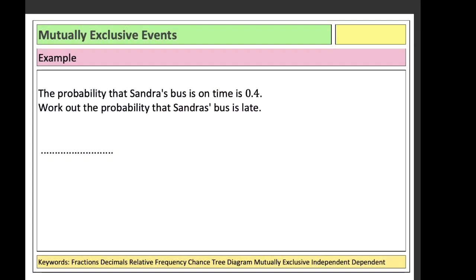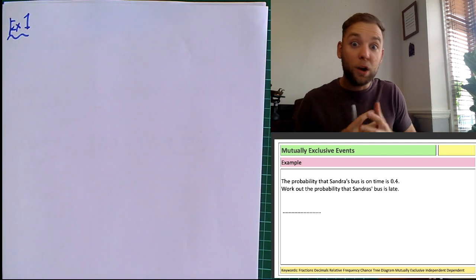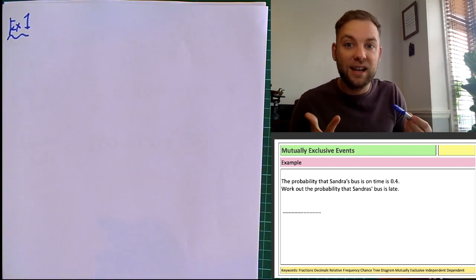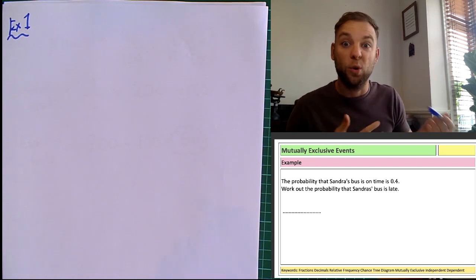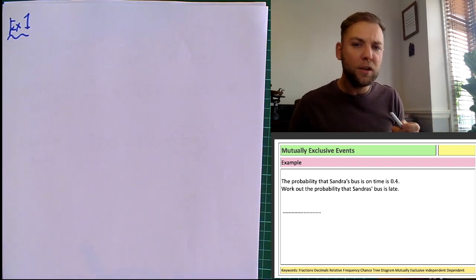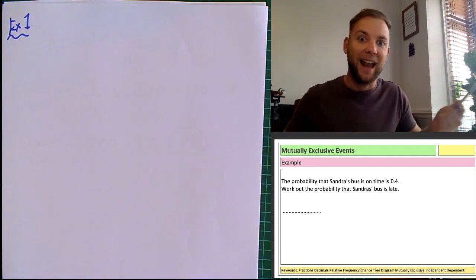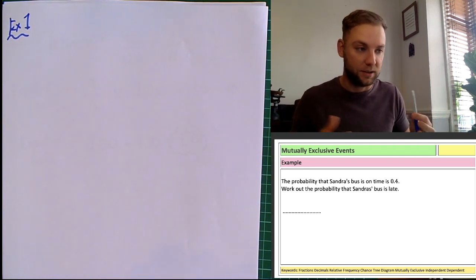So this is example one. Do make sure you're getting these notes down in your book. The probability that Sandra's bus is on time is 0.4. Work out the probability that Sandra's bus is late. We're going to use the fact that these two things are mutually exclusive — the bus can't be late and on time at the same time, it's either late or on time.